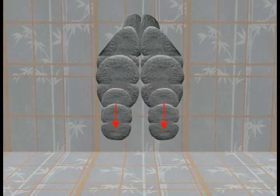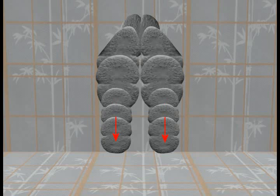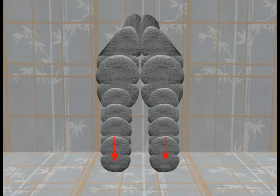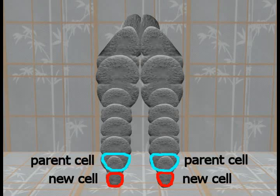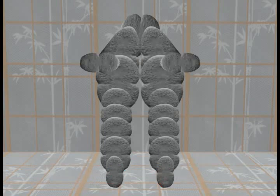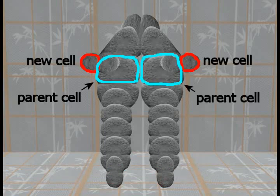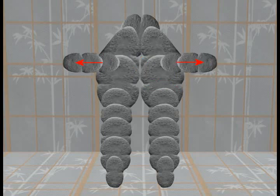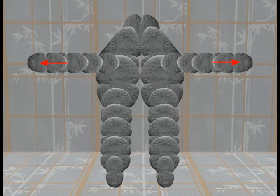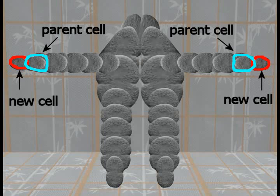Those two new cells then divide downwards, and that new pair also divides downwards. The new cells again divide downwards, and that new pair also divides downwards. The final pair of downward dividing cells are smaller than the parent cells only to make the video more clear. The next set of cell divisions shows new cells dividing out to the side, followed by further sideways divisions, until a final pair of cells divide out to the side. Those new cells are smaller than the parent cells only to make the video more clear.